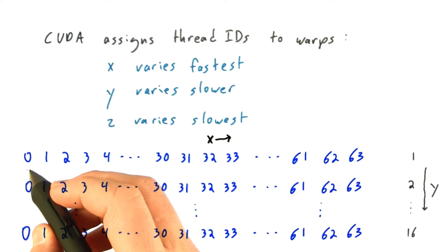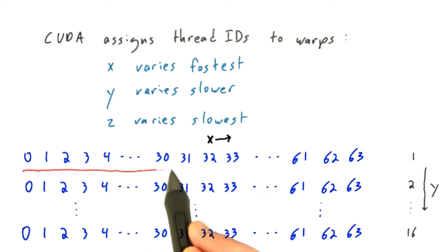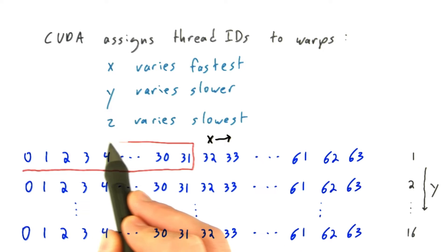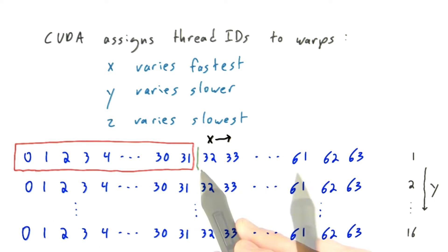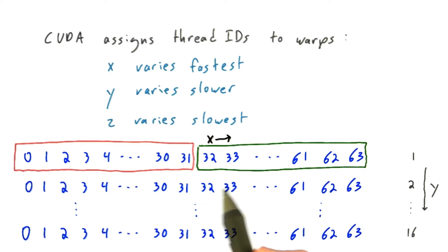And when CUDA assigns these to warps, it will launch a warp with 32 threads comprising X IDs 0 through 31. Then another warp, again with 32 threads, containing thread IDs 32 through 63.